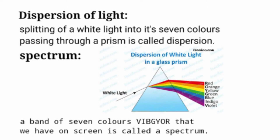Now the question is, what is a spectrum? A band of seven colors that we have on screen is called spectrum.